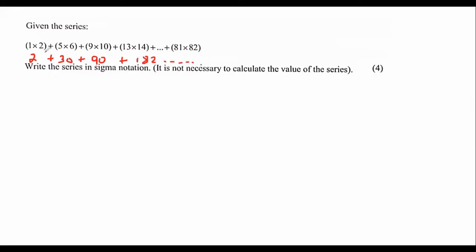So let's see what type of pattern this is. So if I have 2 and 30 and 90 and 182, it might be geometric if I multiply 15. But then if I multiply 15 again, it doesn't work. So it can't be geometric. It's definitely not arithmetic. So it might be the grade 11 quadratic.